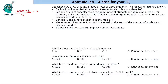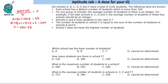So A + B + C + D + E should equal 5k, a multiple of 5. The total of all six schools is 2100, so if we subtract, we get F = 2100 − 5k. For F to be an integer, this should be a multiple of 5, so all these values are multiples of 5.